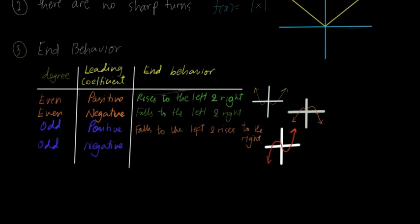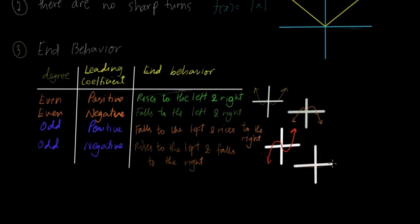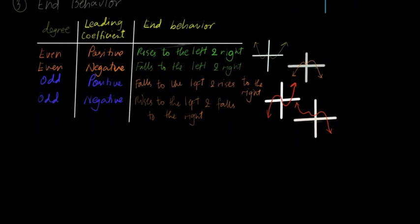Kapag odd na negative, it rises to the left but falls to the right. Ang itsura nun — it rises to the left and then suddenly falls to the right. So that's the third one, or the third thing that we need to consider bago mag-sketch — it's the end behavior.